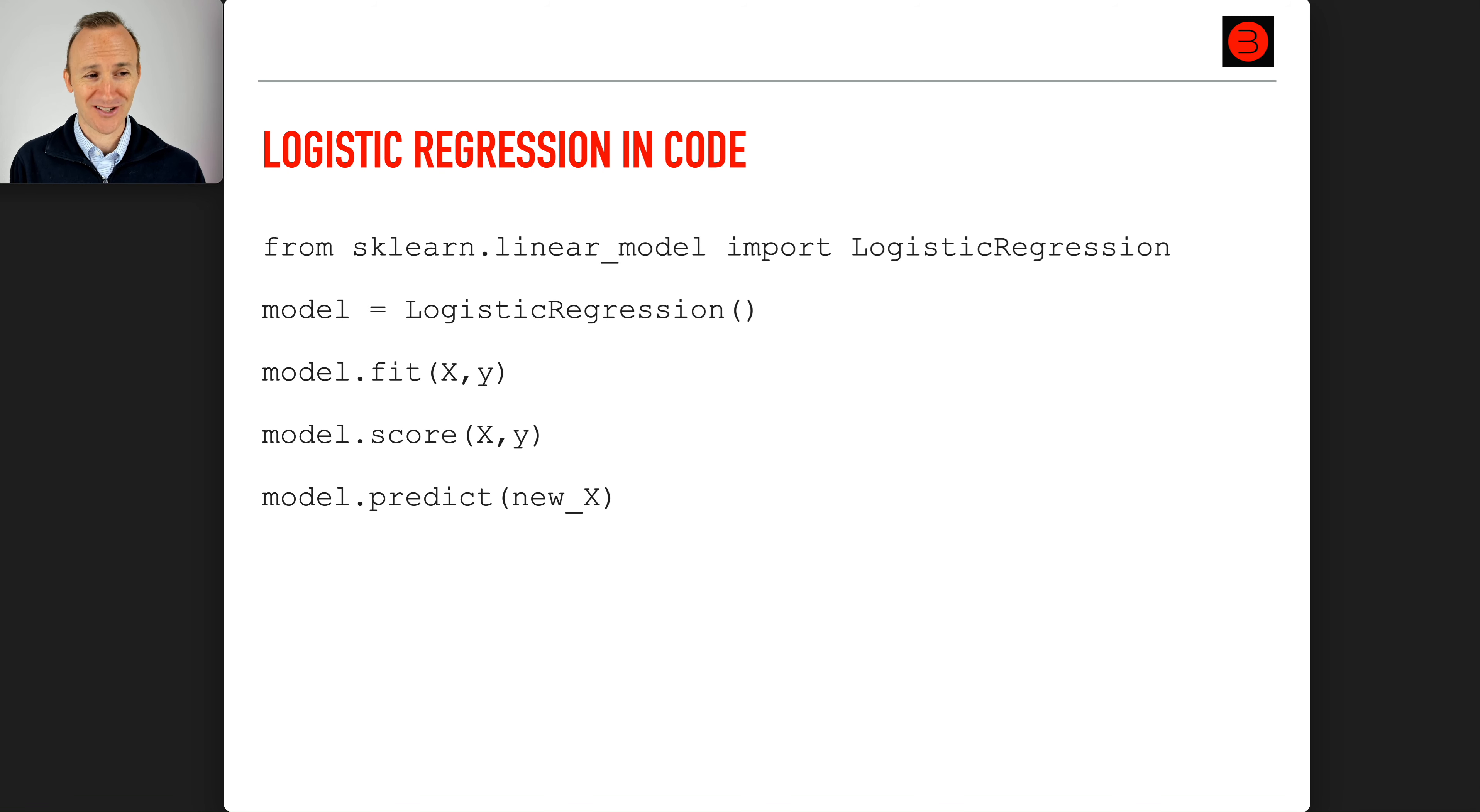Whenever you have a target column which is the column you are trying to predict, like just zero or one, yes or no, two or three values, you want to use logistic regression and it will be scored differently, or another classifier.